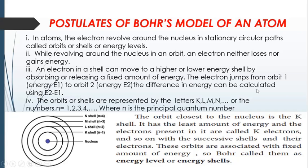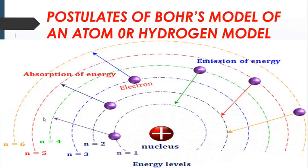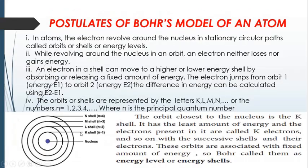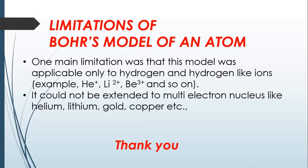The first postulate states that in an atom, electrons revolve around the nucleus in stationary circular paths called orbits or energy levels. The second postulate states that while revolving around the nucleus in an orbit, the electron neither loses nor gains energy. This is very important because it breaks the electromagnetic theory prediction and explains the stability of an atom — as long as the electron revolves in a particular orbit it neither loses nor gains energy.